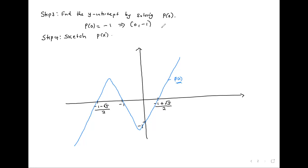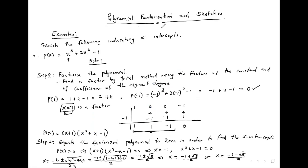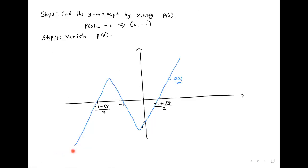In the same way, it is a must to equate the function to zero to get the x-intercept, because P(x) represents y, and y is zero on the x-axis. That's why we equate the whole function to zero whenever we're looking for the x-intercept — it's a must for all functions.